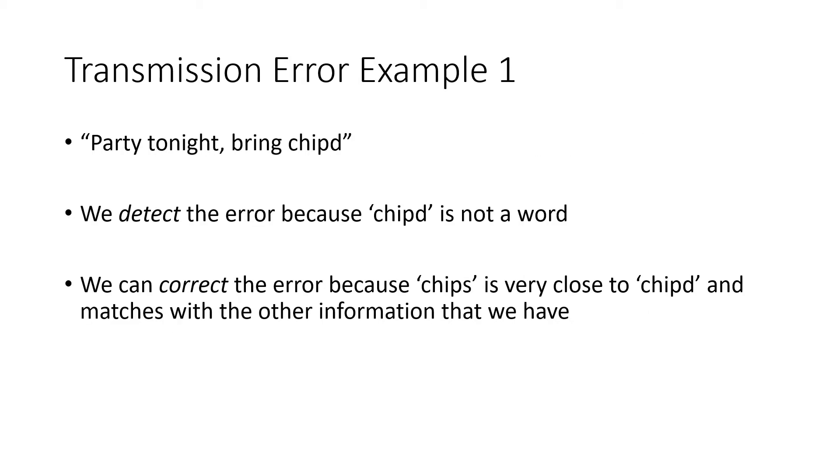Here are some examples of transmission errors. Let's say we're trying to text our friend, and our friend receives the message, party tonight, bring, and then CHIPD. We can detect an error because that sequence of letters is not a word. So we know something went wrong. But we can correct the error because the word chips is pretty close to what we received, CHIPD, and so we figure that's probably what they meant.